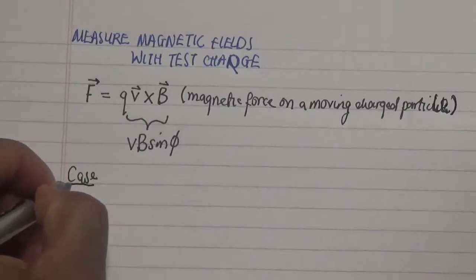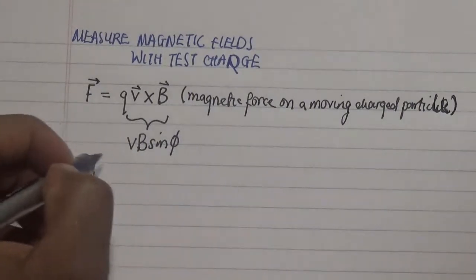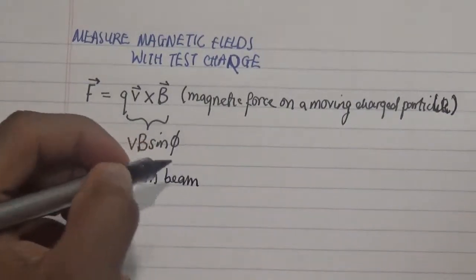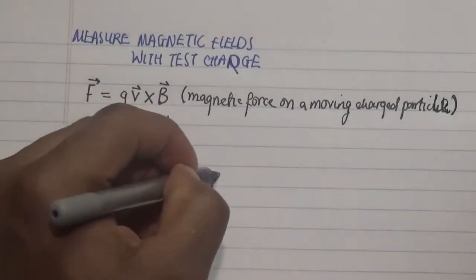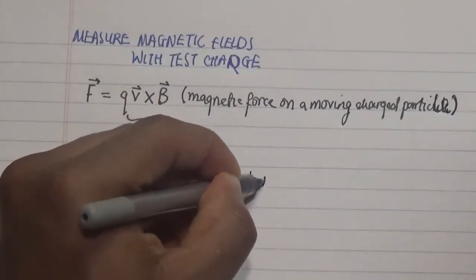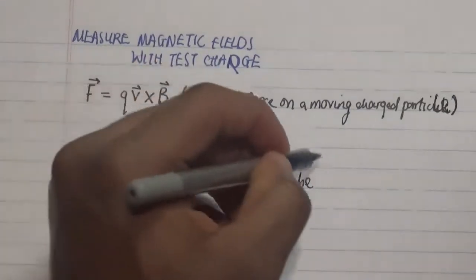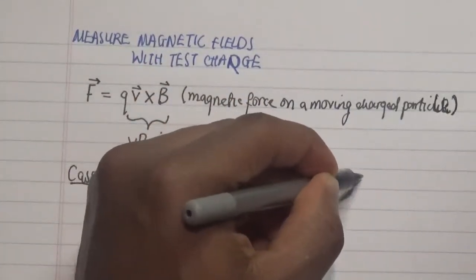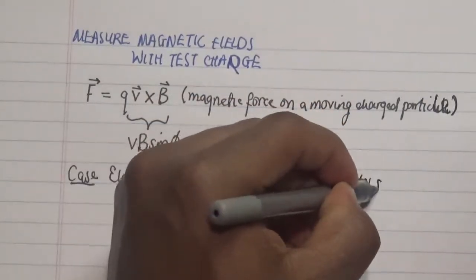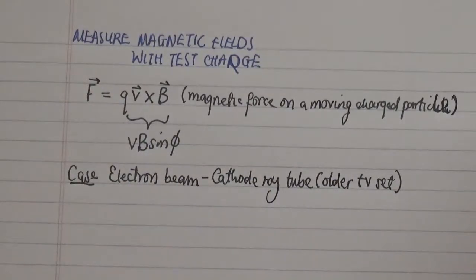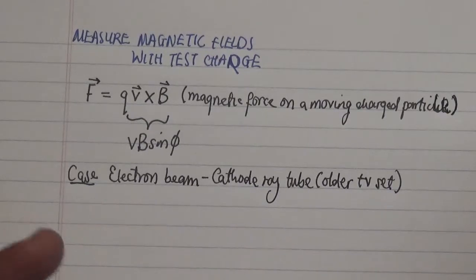This case comes from a particular electron beam generated in a cathode ray tube. The cathode ray tube is found in the majority of older televisions. These TV sets have cathode ray tubes that shoot beams of electrons, and an electron gun shoots this beam of electrons at known velocities.